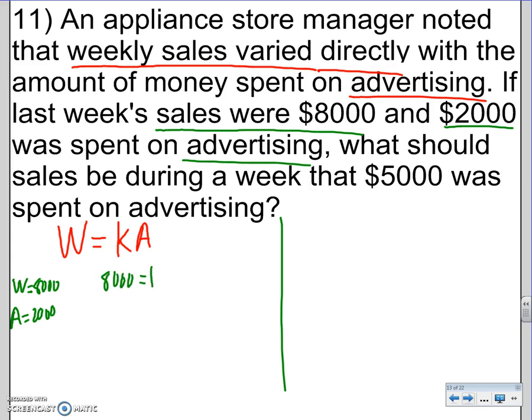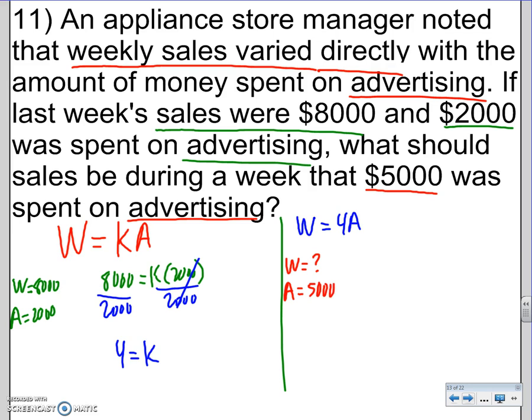So, W is 8,000 equals K times 2,000. I'll divide both sides by 2,000 and solve for K. 8,000 divided by 2,000 is 4. K is 4. So, now we know the real equation. W equals 4 times A. Let's look at the unknown situation. It says, what should the sales be during a week where 5,000 was spent on advertising? So, we don't know what W is. But we know 5,000 was spent on advertising. So, A is 5,000. W equals 4 times 5,000. 4 times 5,000 is 20,000. That's the answer. Make sure you know there's two problems. You find K first using the first scenario, and then you plug that K into the second scenario.